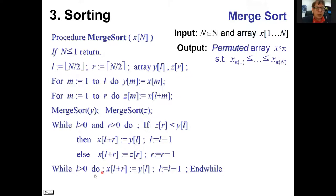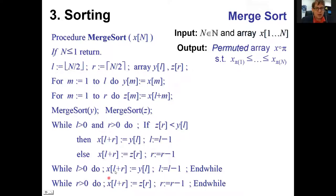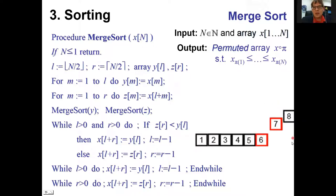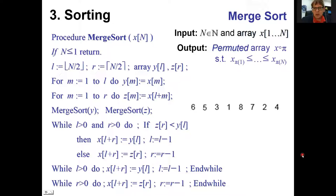When either the left or right subarray is exhausted, we copy the remaining elements from whichever array is left to the rest of X. Here you see an example execution: two already-sorted subarrays being merged into one sorted result.